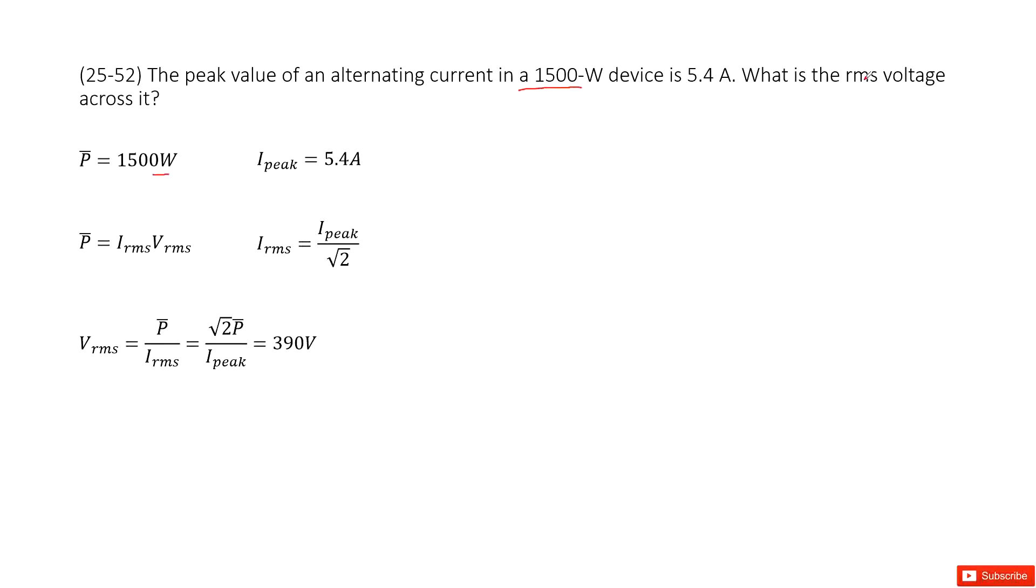Very straightforward, we can consider the relationship between current, voltage and power. The voltage is equal to the power over the current. This is the definition: power equals I times V.